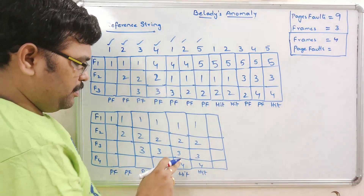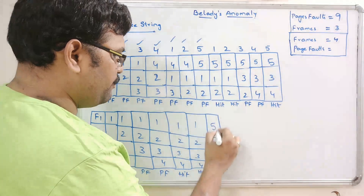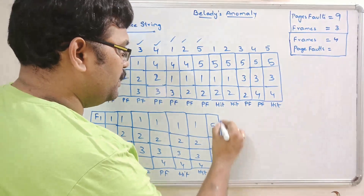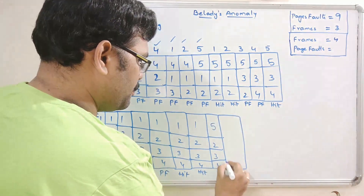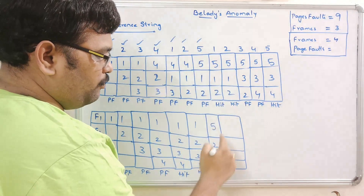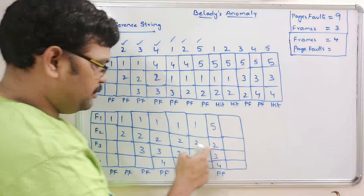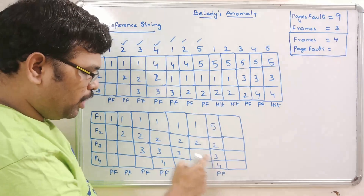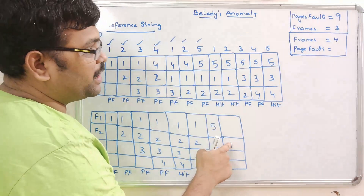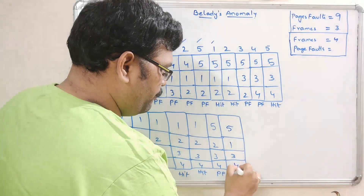Page 5 is not available — we must replace. Page 1 is the oldest, so page 1 is replaced with page 5 — page fault. Next, page 1 is not available. Among the frames, page 2 is the next oldest, so page 2 is replaced with page 1: frames are now 5, 1, 3, 4.